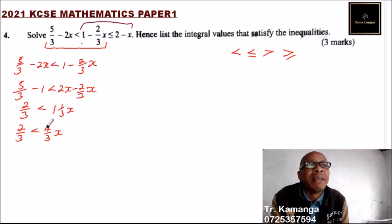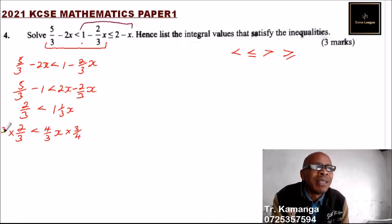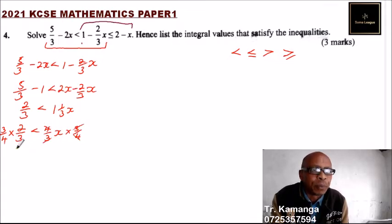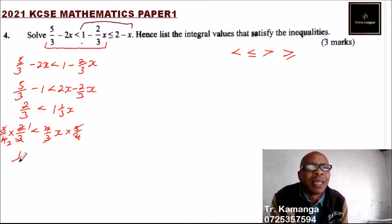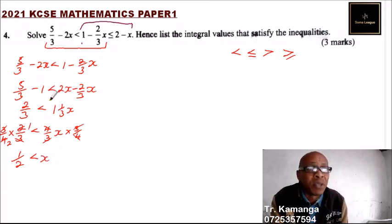To eliminate the fraction, we multiply both sides by 3 over 4. This cancels the 4 and 3, and we cancel 3 by 3, leaving us with 1 over 2 less than x. So x is greater than a half.